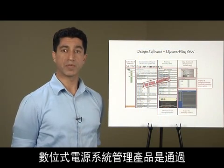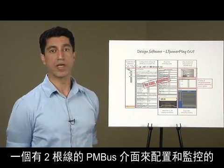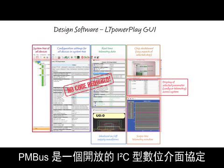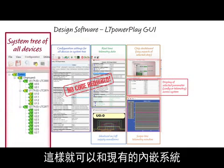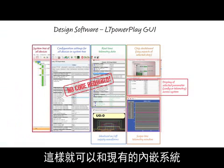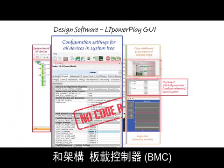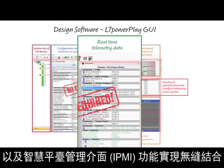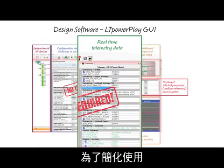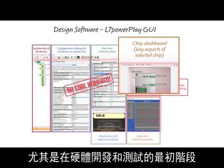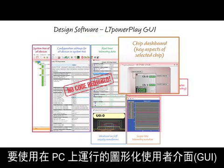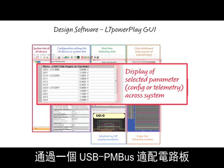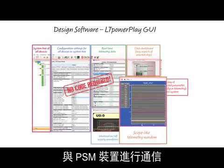Digital power system management products are configured and monitored via a two-wire PMBus interface, an open I2C-based digital interface protocol. This enables seamless integration with existing embedded systems and architectures, board mount controllers, BMCs, and intelligent platform management interface, IPMI, functions. For simplicity and ease of use, especially at the earliest stages of hardware development and testing, a GUI running on a PC is used to communicate with a PSM device through a USB to PMBus adapter board.